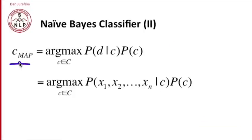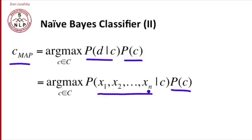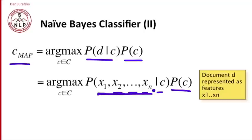The most likely class is the one that maximizes the product of these two probabilities. The probability of the class will turn out to be relatively simple to compute. What do I mean by the probability of a document given the class — how likely is this particular movie review given the class 'positive'? One way to operationalize that is to represent the document as a whole set of features x1 through xn. So the probability of D given C becomes the joint probability of x1, x2, up through xn, given the class.